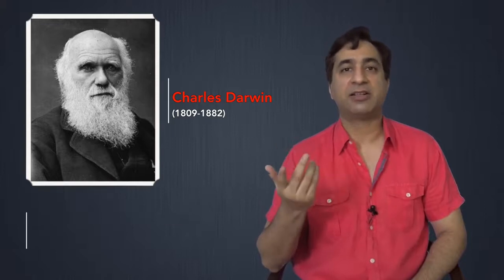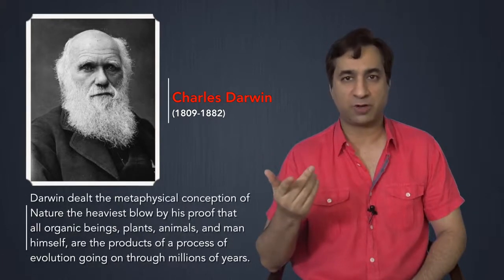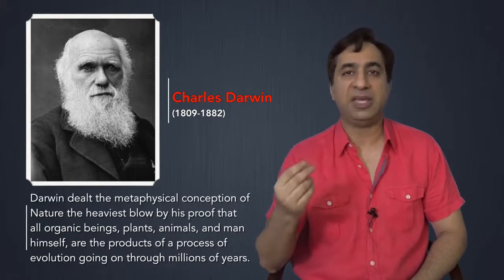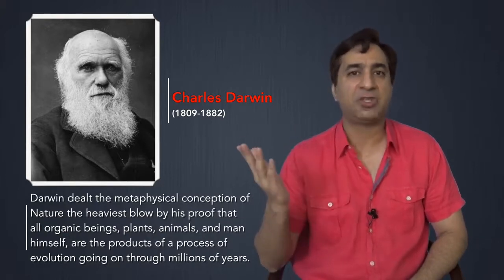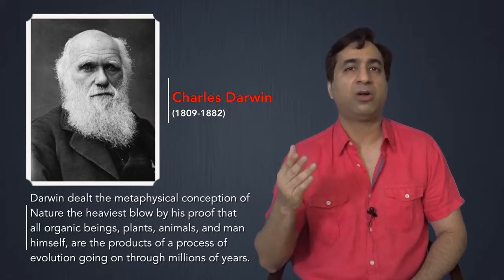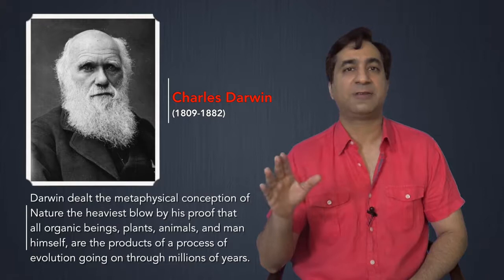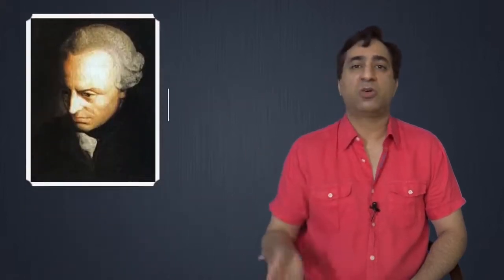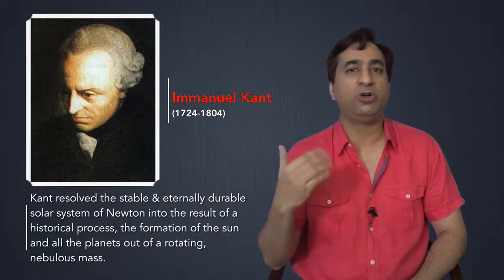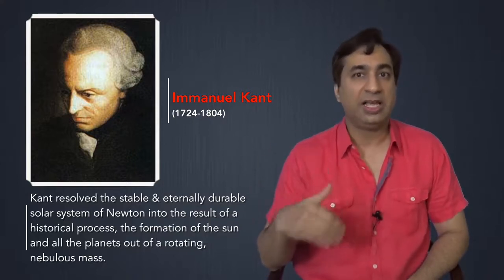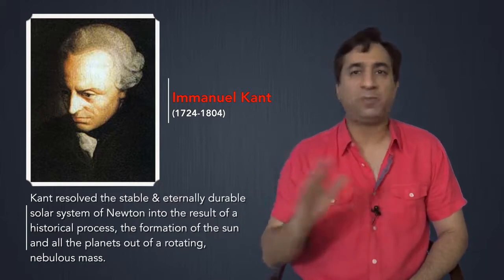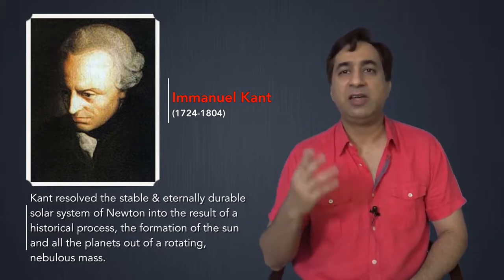Darwin, says Engels, dealt the metaphysical conception of nature the heaviest blow by his proof that all organic beings, plants, animals and man himself are the products of a process of evolution going on through millions of years. And Immanuel Kant was also a dialectician. He resolved the stable and eternally durable solar system of Newton into the result of a historical process, the formation of the sun and all the planets out of a rotating nebulous mass.